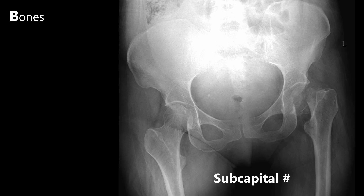This patient has a left-sided subcapital fracture, which is a type of intracapsular fracture. It's Garden type 4, so is completely displaced. Displaced neck of femur fractures like this one will usually cause the leg to appear shortened and externally rotated. This femoral head will need to be replaced. Notice the asymmetry between the femoral necks and also the disruption to Shenton's line on the left. Neck of femur fractures are typically associated with elderly patients who have osteoporotic bones and can be the result of a seemingly low impact fall.